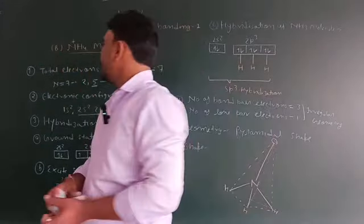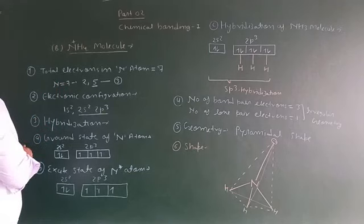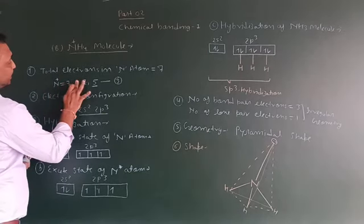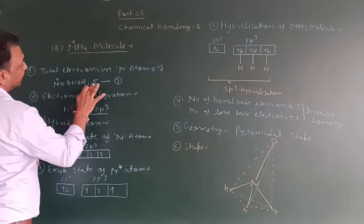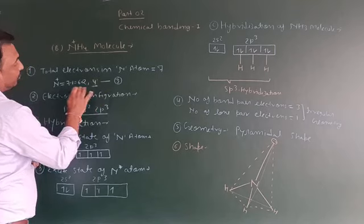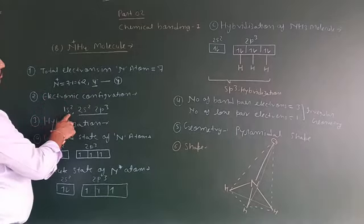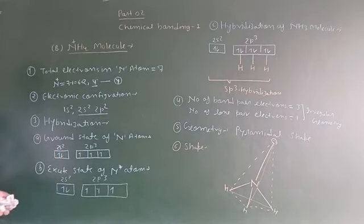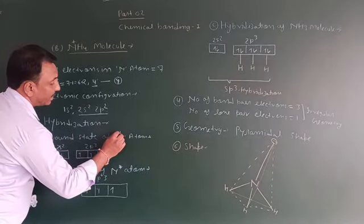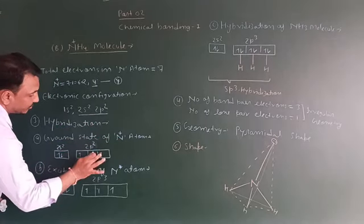Total electrons in N atom is 7. For N+ we take 7 minus 1 equals 6. 6 electrons divide as 2 and 4. Electronic configuration of N+ is 1s2, 2s2, 2p2. Ground state of N+ atom: 2s2, 2p2।